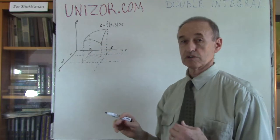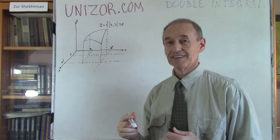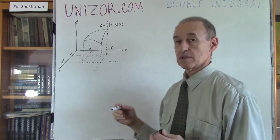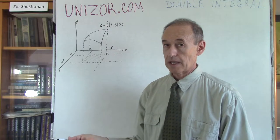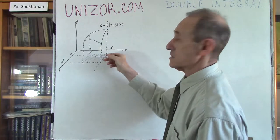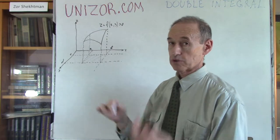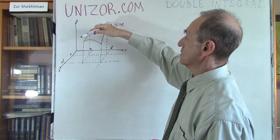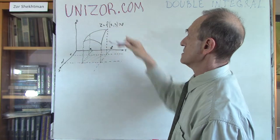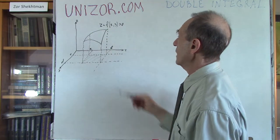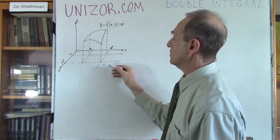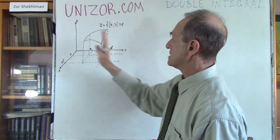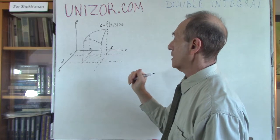This is the graph of my function. I would like to know the volume — we are talking about a three-dimensional case, so we are talking about the volume under this surface, not a curve. On the top, it's limited by this surface which represents the three-dimensional graph of f(x, y). On the bottom, it's the xy-plane, and on the left and the right, we have planes bounding our area.